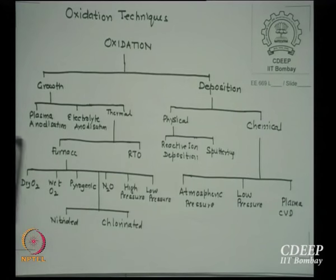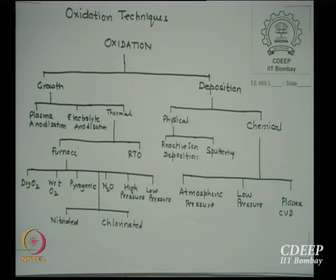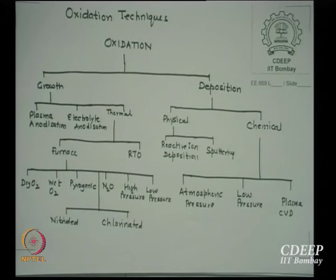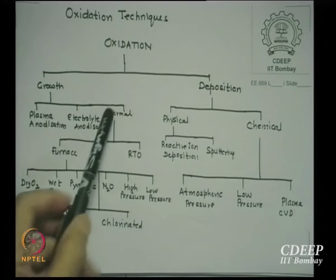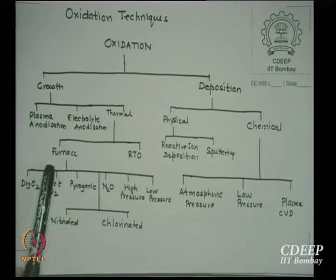Plasma anodization was explored in the 1980s but did not find industrial acceptance because of throughput. The number of devices one can create in a single run is critical — in a furnace you can put 200 wafers, but a plasma anodization system would handle only 4 wafers at a time, making it very costly. This process can grow even 10 Angstroms of good oxide, but it is not an industrial process. You can also have the Sol-gel method to deposit SiO2. However, the most common method is thermal, using a furnace.